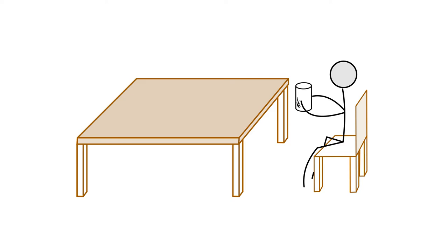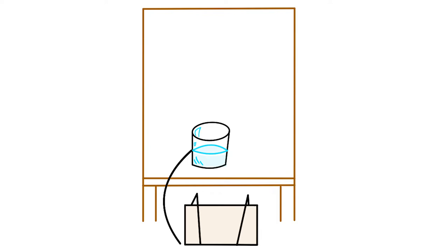Finally, internal focalization is when the narrator knows what the character knows. This is often paired with first-person narration, for obvious reasons. In our example, the narrator is the man, and the audience is told what he is thinking from his perspective.